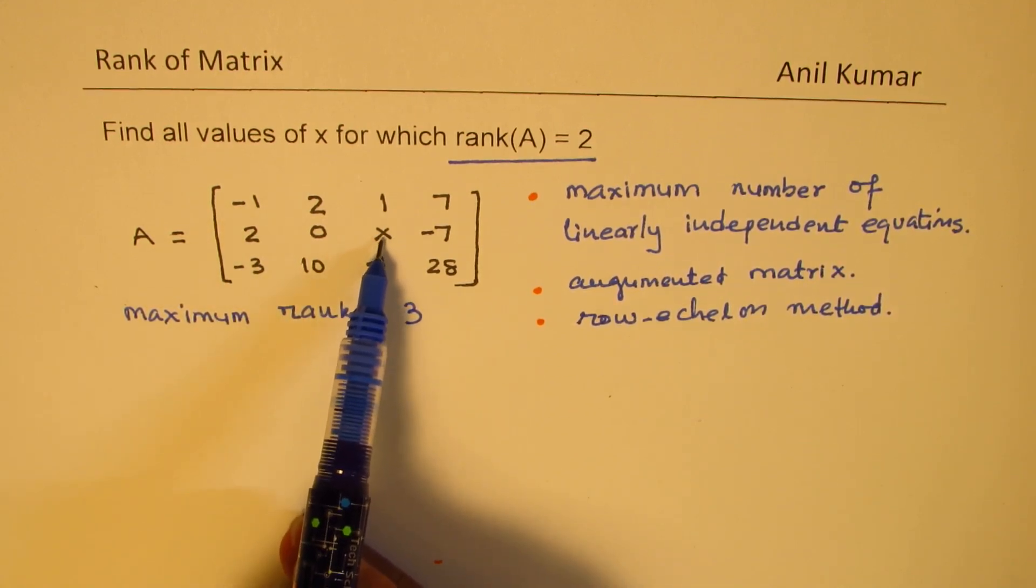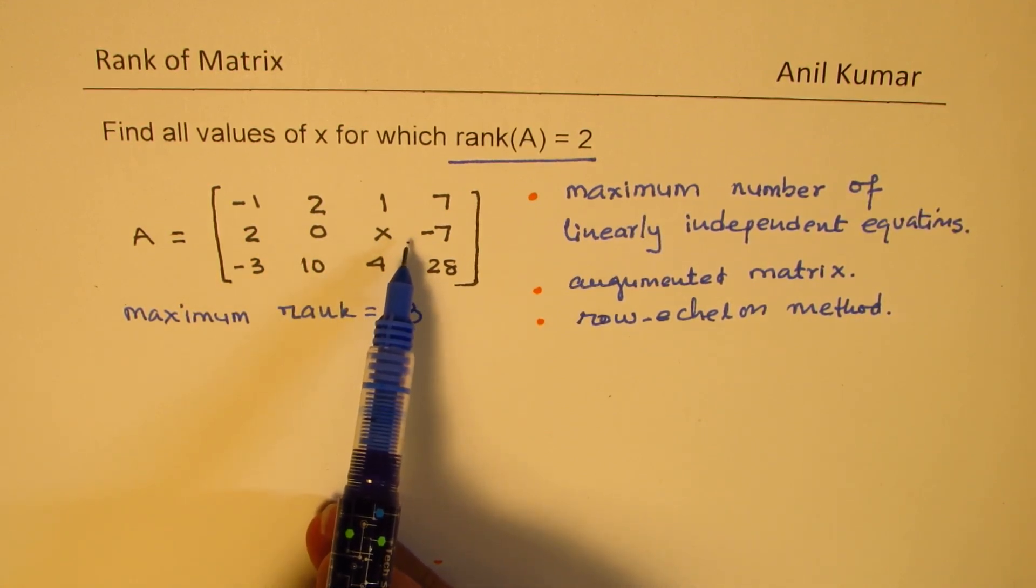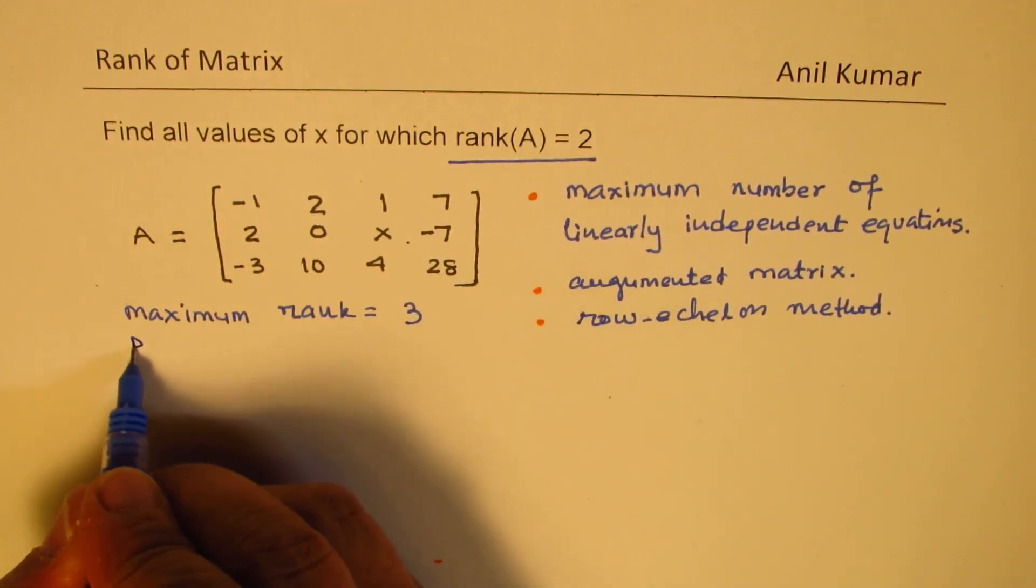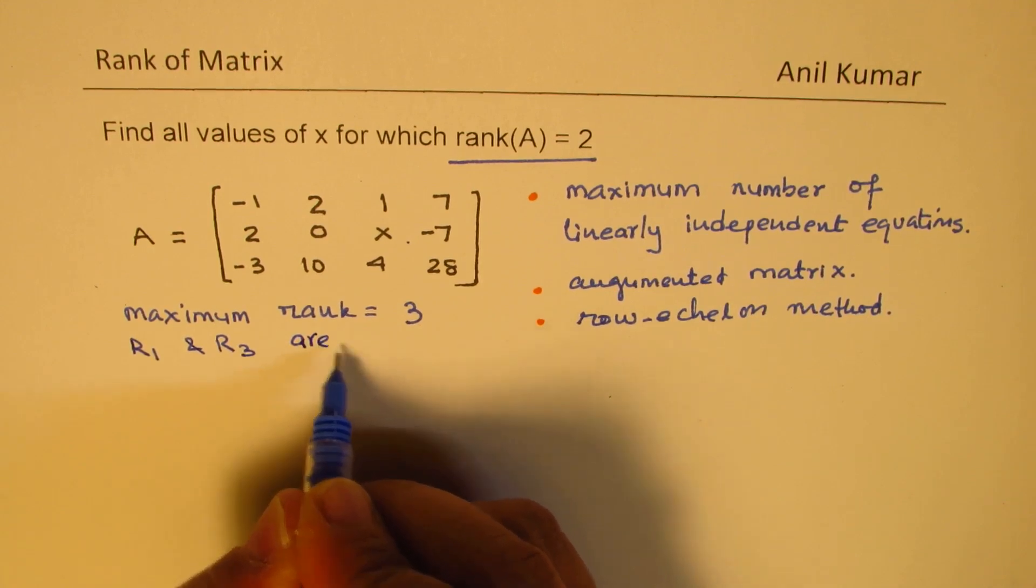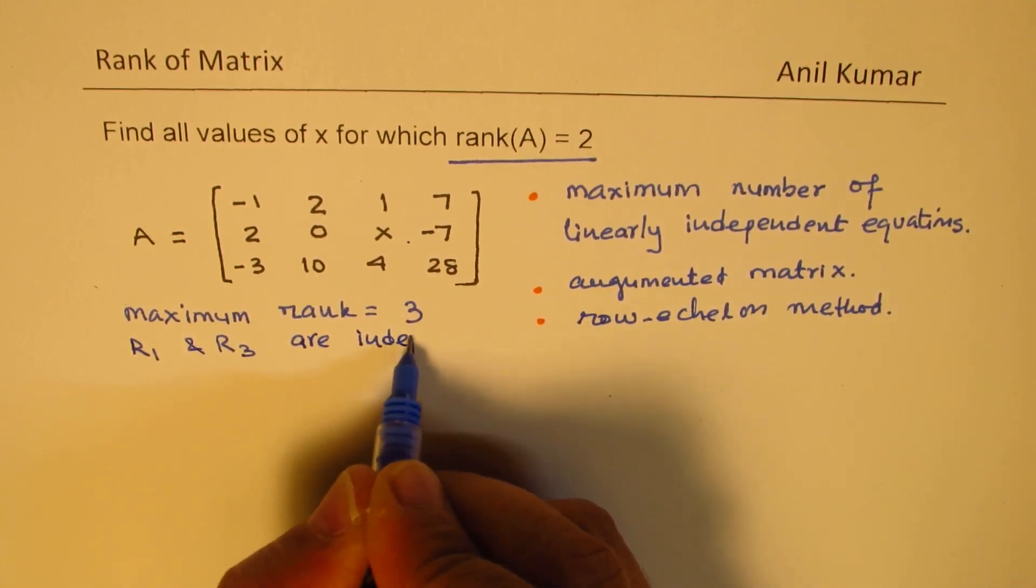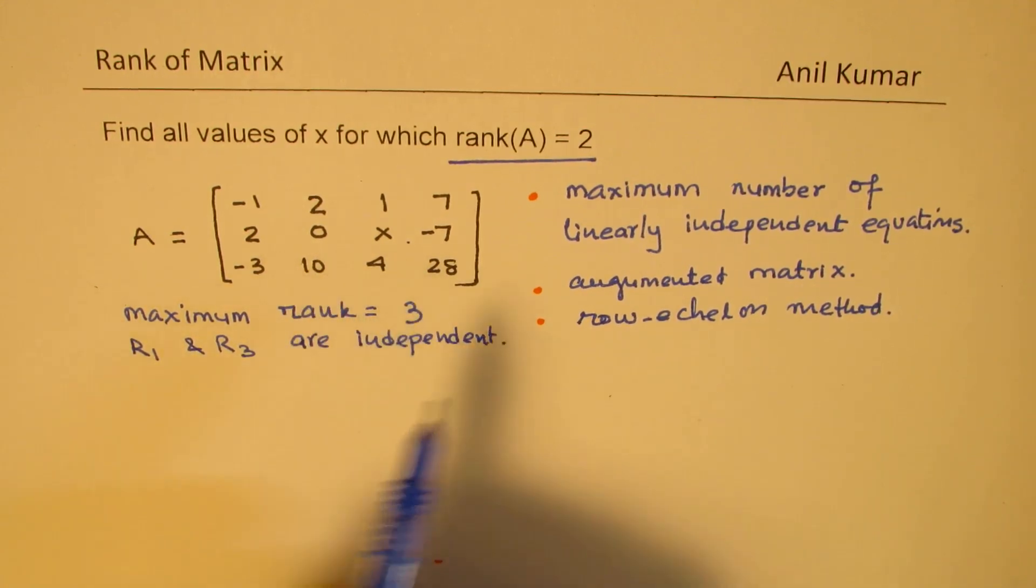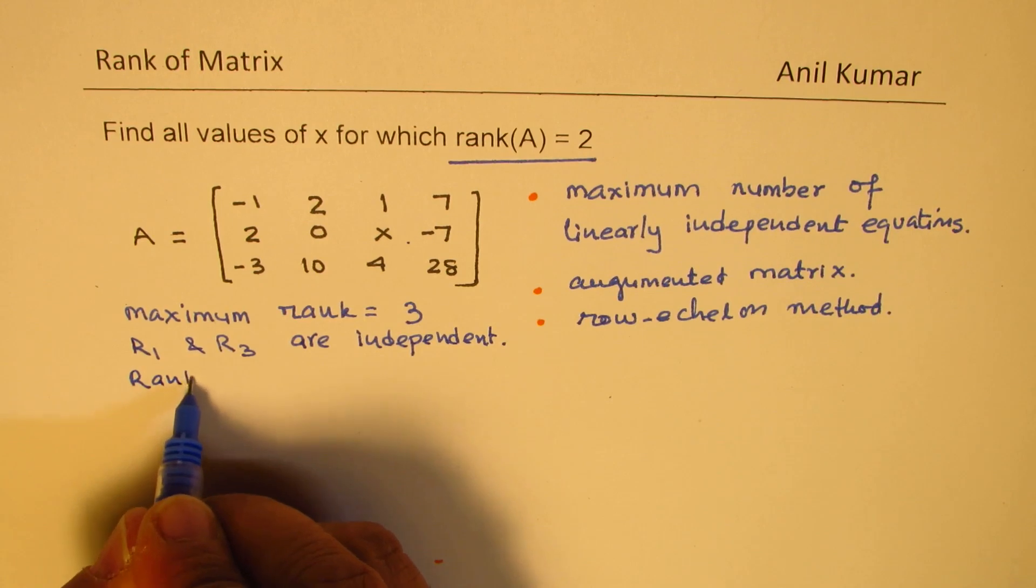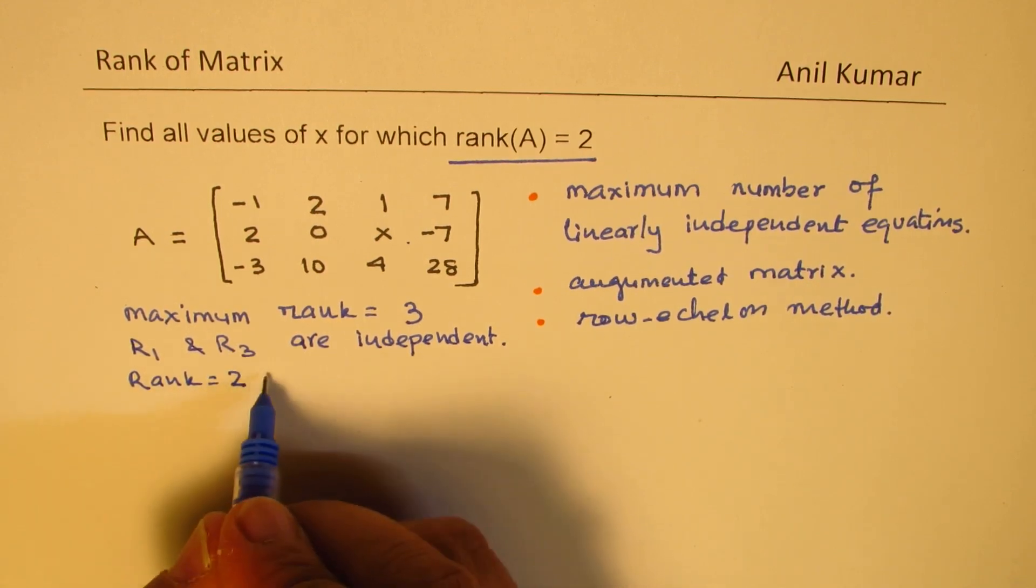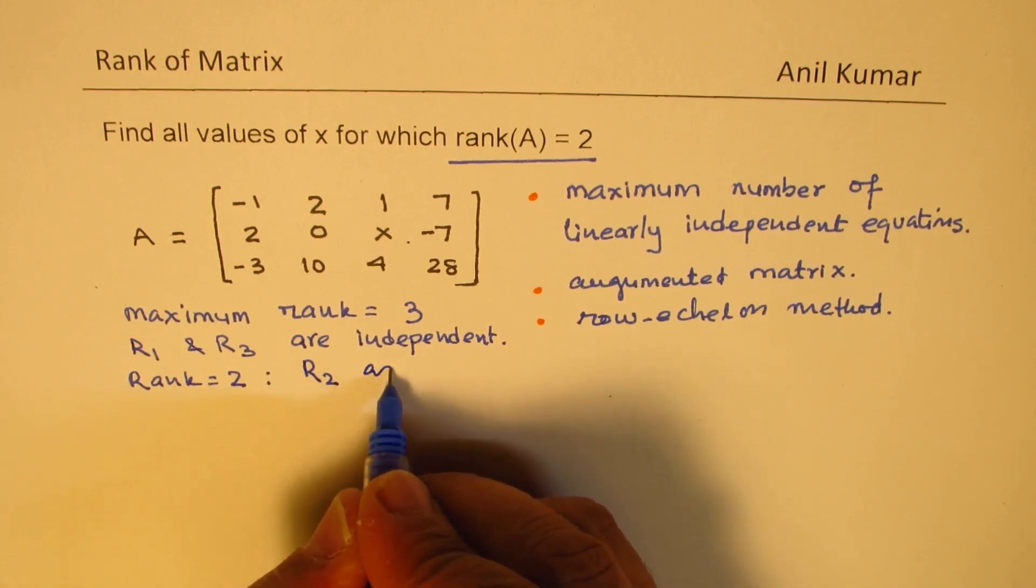Depending on the value of x, second row can be dependent or independent. That's the whole idea. We know that row 1 and row 3 are independent. To make the rank 2, if I am saying that the rank is equal to 2, that means I have to make the row 2 as dependent.